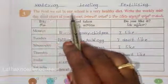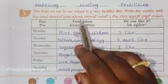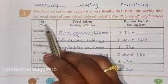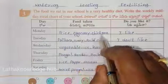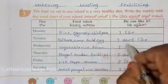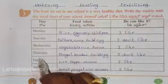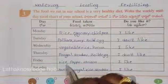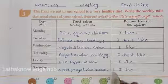The food we eat in our school is a very healthy diet. Write the weekly midday meal chart of your school. Monday: rice, egg curry, chickpea - I like this menu. Tuesday: pulihora, curry, boiled egg - I don't like pulihora. Wednesday: vegetable rice and kurma - I like it. Thursday: pongal, sambar, boiled egg - I don't like it. Friday: rice, pappu, rasam - I like it. Saturday: sweet pongal, rice, sambar - I like this menu.